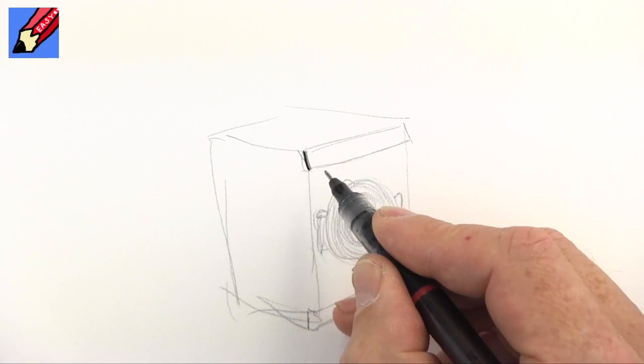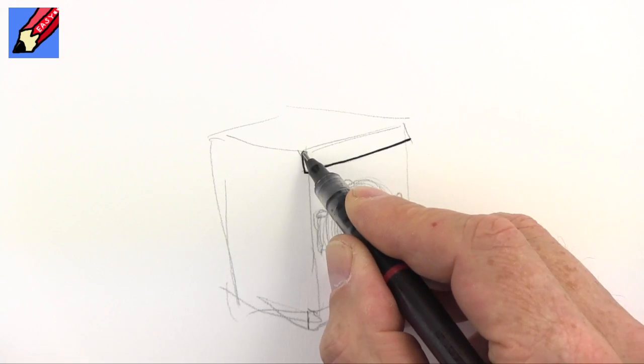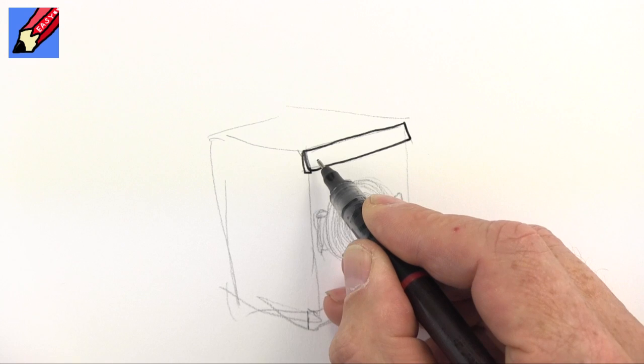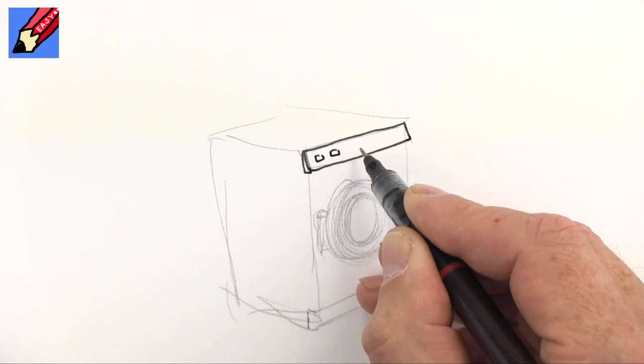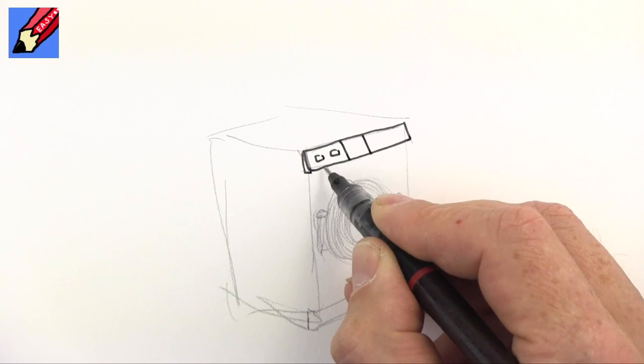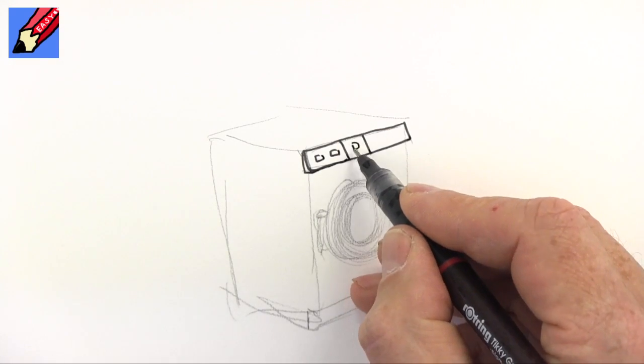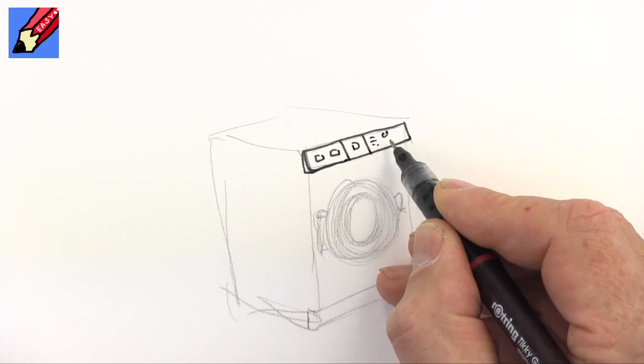So I am going to draw in this control panel first and we'll put some little dials and switches, and oh that's the bit where you put your stuff in. You pull the drawer out, but anyway let's have some more dials and switches and things like that.